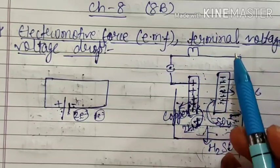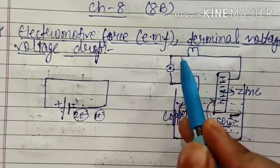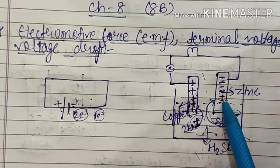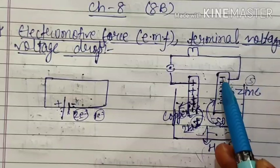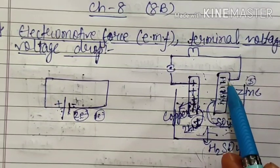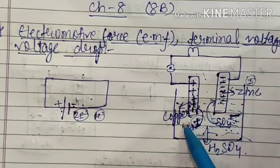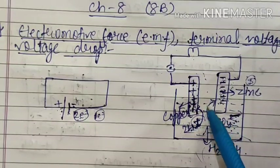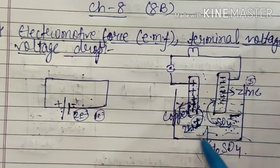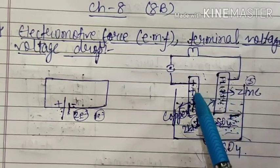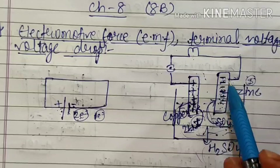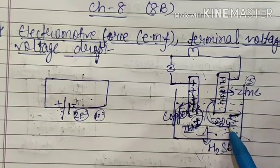As the current flows and the bulb consumes electricity, the number of charges on the electrodes decreases. As the charge decreases, the repulsion between the electrodes and the ions also decreases, so the reaction starts again and charges are deposited once more. Ultimately, the electrolyte continuously maintains a potential difference between both electrodes — the charges on them will never become zero because of the electrolyte.